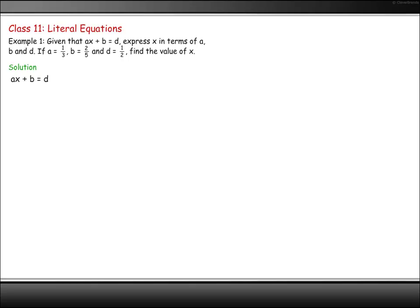Get the term with x on its own. Move the plus b term across where it changes sign. Now isolate the x by dividing both sides by a.